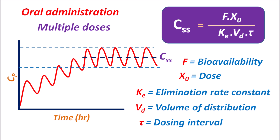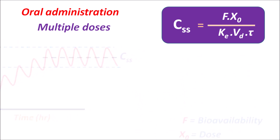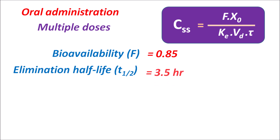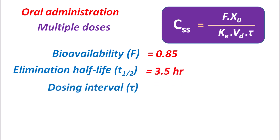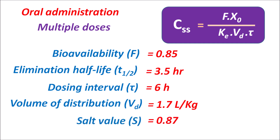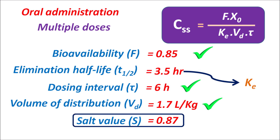The data given: bioavailability F is 0.85, elimination half-life T½ is 3.5 hours, dosing interval tau is 6 hours, volume of distribution Vd is 1.7 L/kg, and salt value is 0.87. In this equation we have bioavailability, dosing interval, and volume of distribution, but Ke is not given — instead half-life is given, so we calculate Ke from half-life. The salt value is a correction factor for the dose.